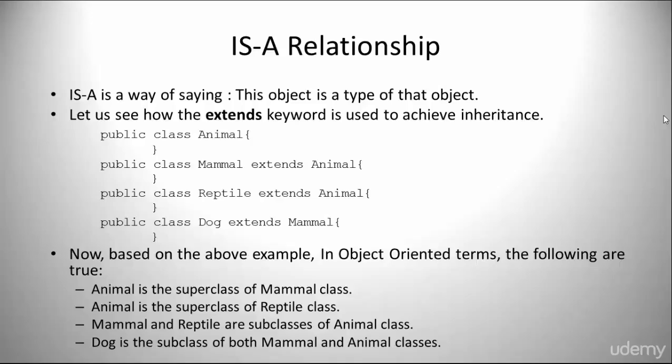In this code, we have Animal, Mammal which extends Animal, Reptile which extends Animal, and Dog which also extends Mammal. Based on the above example, in object-oriented terms, the following are true: Animal is a superclass of the Mammal class, Animal is a superclass of the Reptile class, Mammal and Reptile are subclasses of the Animal class, and Dog is the subclass of both Mammal and Animal classes.